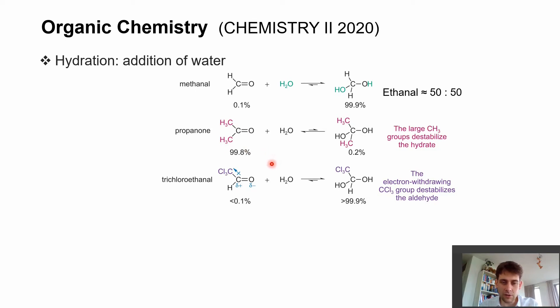Other molecules that show this tendency to hydrate in water are, for example, trichloroethanal. The hydrogen atoms in the alpha carbon are replaced with chlorine atoms, which have a strong electron-withdrawing effect. So this carbon atom becomes more electrophilic, and then the water molecule can add, and we find a large fraction of this gem diol.